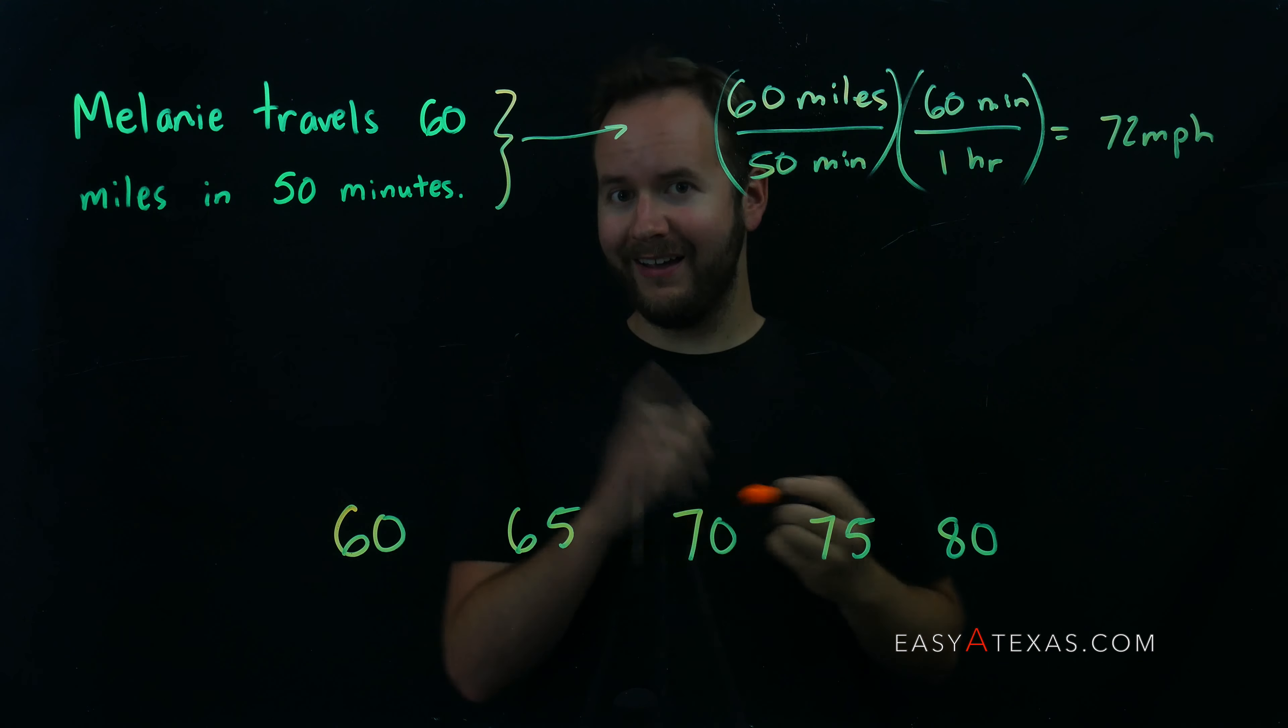If the speed limit were 75, let's go ahead and cross this out. If the speed limit were 75, would she be speeding? No, because 72 is still under 75.